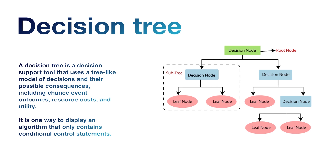A decision tree is a decision support tool that uses a tree-like model of decisions. Let's say you have a refined idea after brainstorming, but you need to decide whether it is going to work or not — you can draw a decision tree. It uses a flowchart-like model with possible consequences including chance events, outcomes, and resources. It is a very easy way to display an algorithm that only contains conditional control statements.